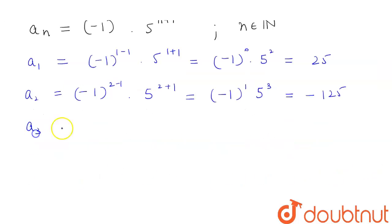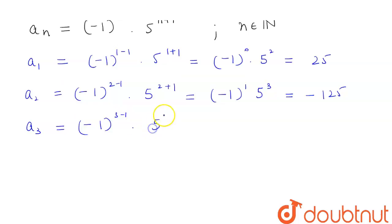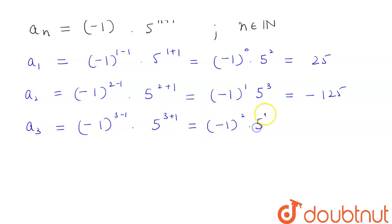The value of a3 will be equal to (-1)^(3-1) × 5^(3+1), that is equal to (-1)^2 × 5^4. We know that (-1)^2 is positive 1, so this will be equal to 625.